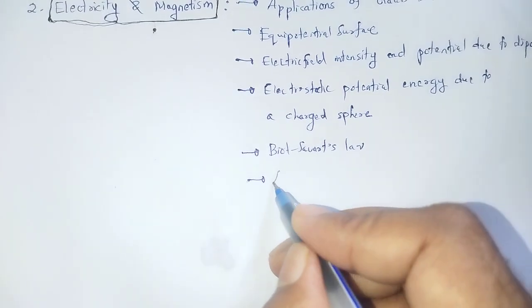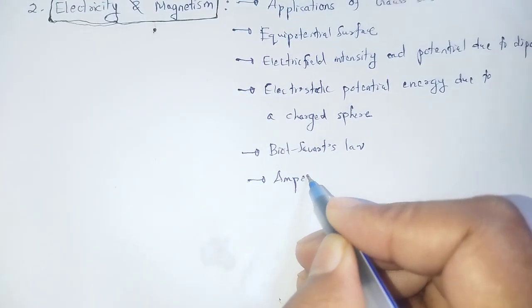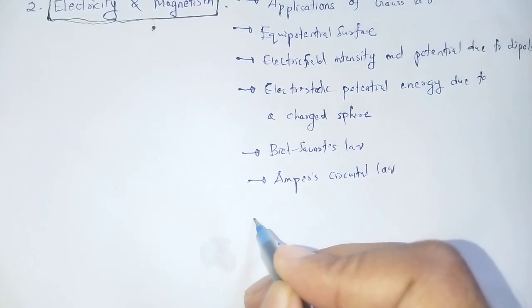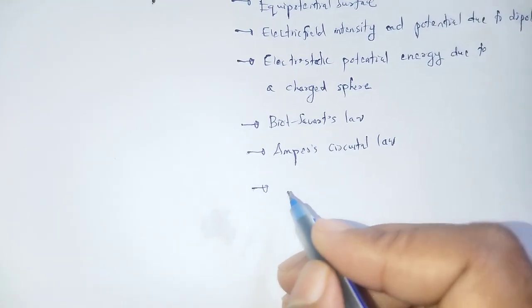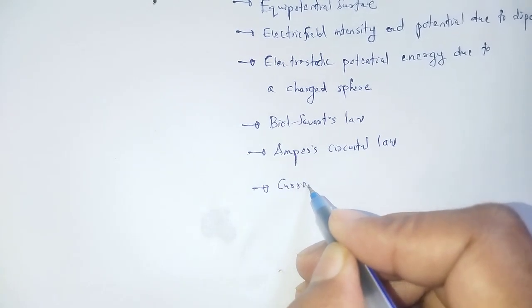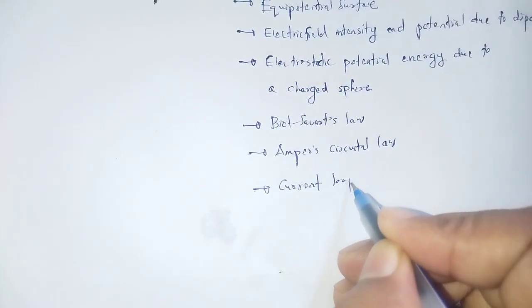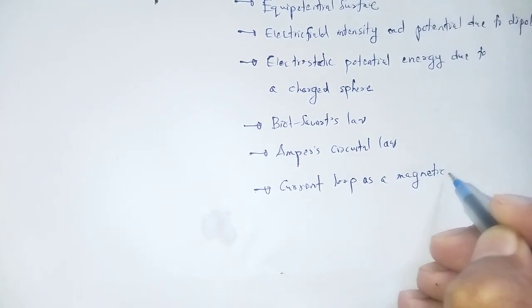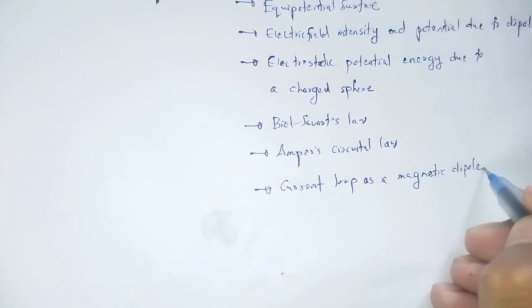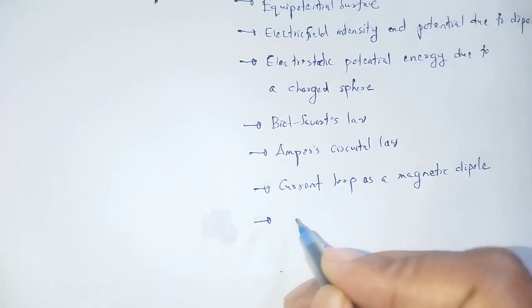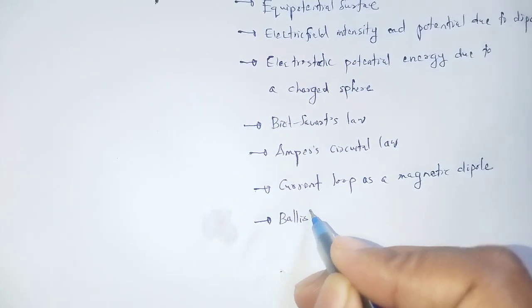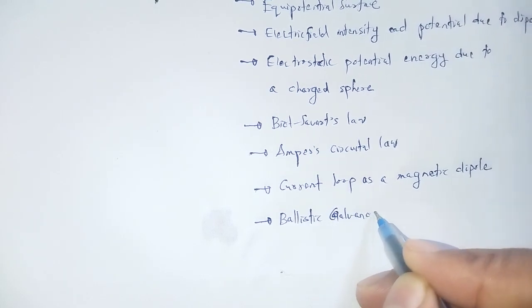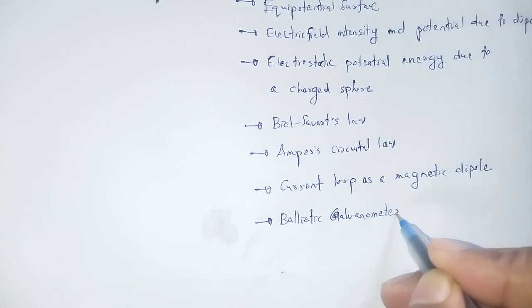Next, Ampere's circuits and their applications. Current loop as a magnetic dipole. Next, Ballistic Galvanometer.